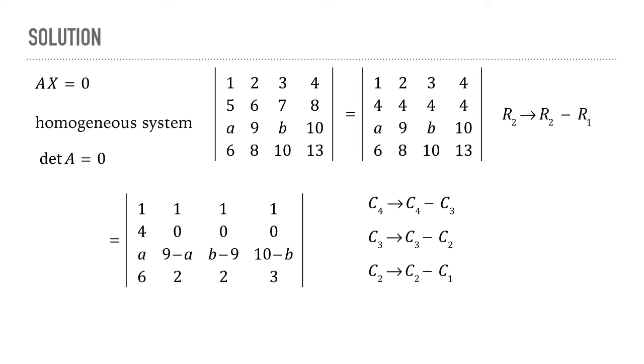So we have a lot of zeros in the second row. So we can expand this determinant by the second row and get a third order determinant.